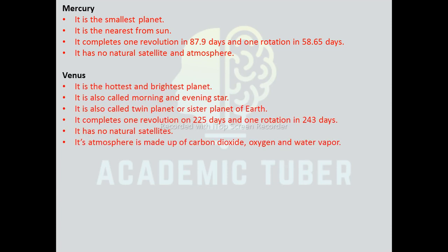Venus: its atmosphere is made up of carbon dioxide, oxygen, and water vapor. It is the hottest and brightest planet of our solar system, also known as the morning and evening star. It is also called the twin planet or sister planet of Earth. It completes one revolution in 225 days and one rotation in 243 days, and it has no satellites.